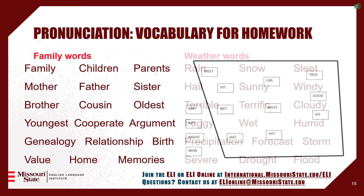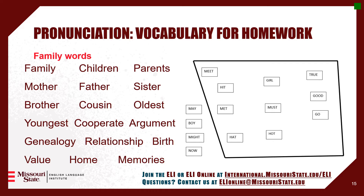Let's practice some of this vocabulary for your homework assignment. These are the family words — listen for what vowel sounds I'm using, and also what consonant sounds might be difficult for you: children, parents, mother, father, sister, brother, cousin, oldest, youngest, cooperate, argument, genealogy, relationship, birth, value, home, and memories. You can use some or all of these words in your recording, but try to choose words that have sounds that are difficult for you to pronounce.